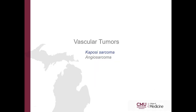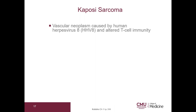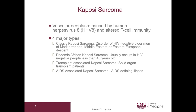Let's go on to Kaposi's sarcoma. This is a vascular neoplasm caused by HHV-8 and altered T cell immunity. There are four major types. Classical Kaposi's sarcoma is a disorder of HIV-negative older men of Mediterranean, Middle Eastern, or Eastern European descent. There is endemic African Kaposi's sarcoma, which usually occurs in HIV-negative people less than 40 years old. Transplant-associated Kaposi's sarcoma occurs in solid organ transplant patients. And there is AIDS-associated Kaposi's sarcoma, which is an AIDS-defining illness. The prognosis will depend on the clinical setting.